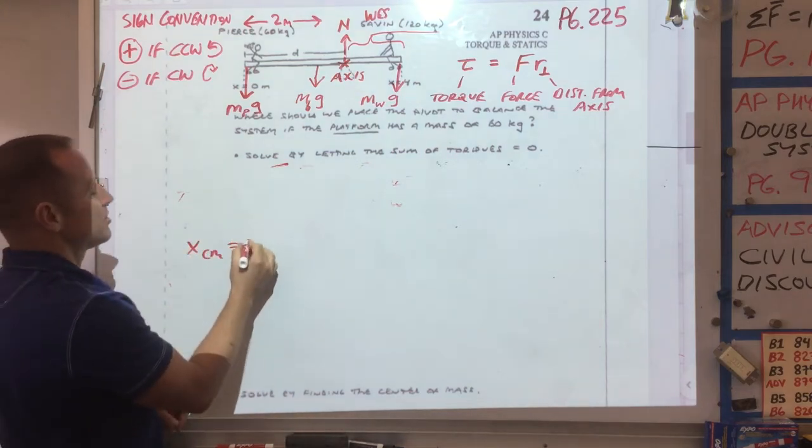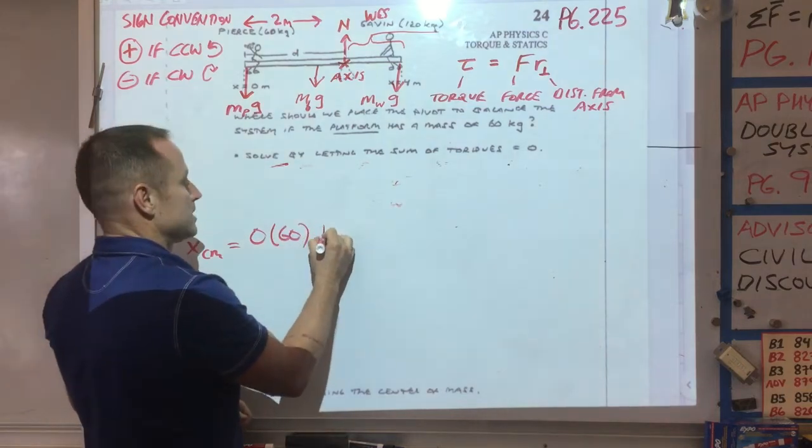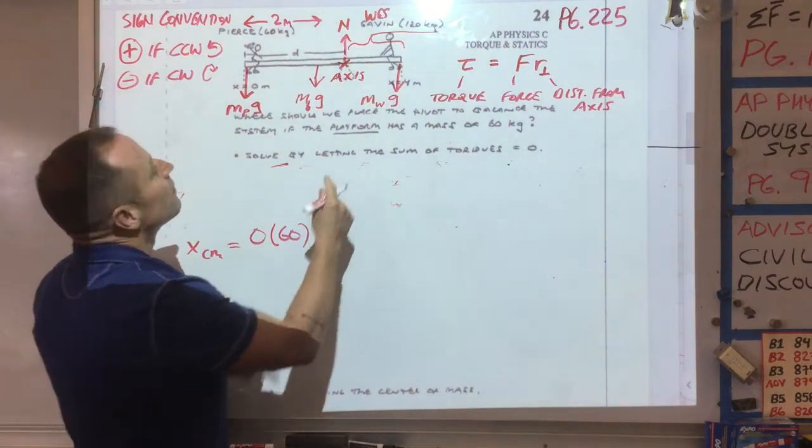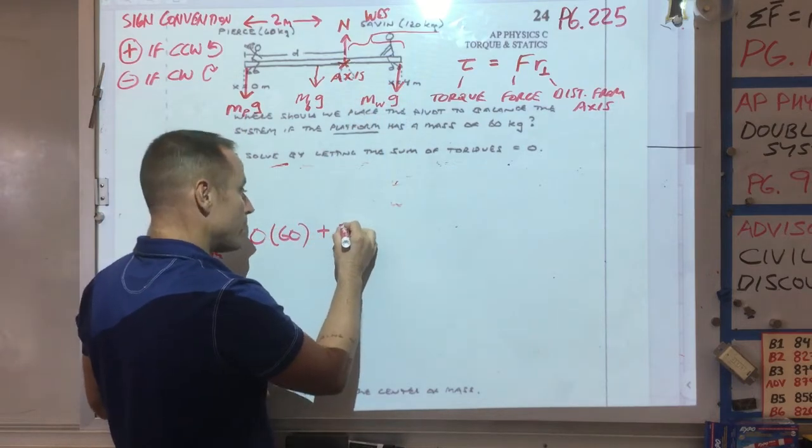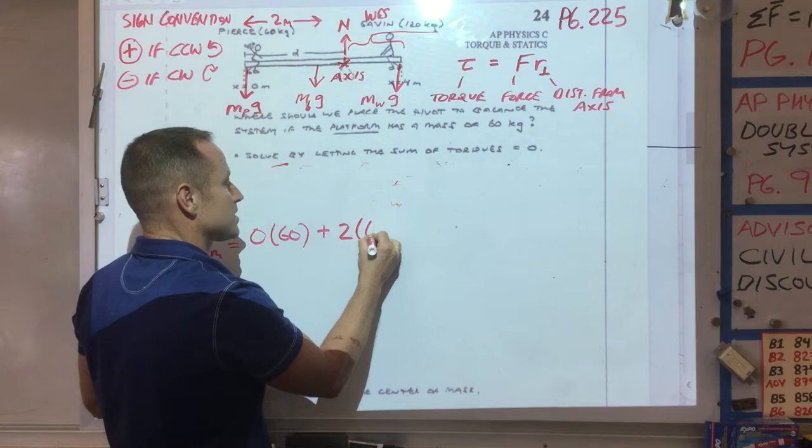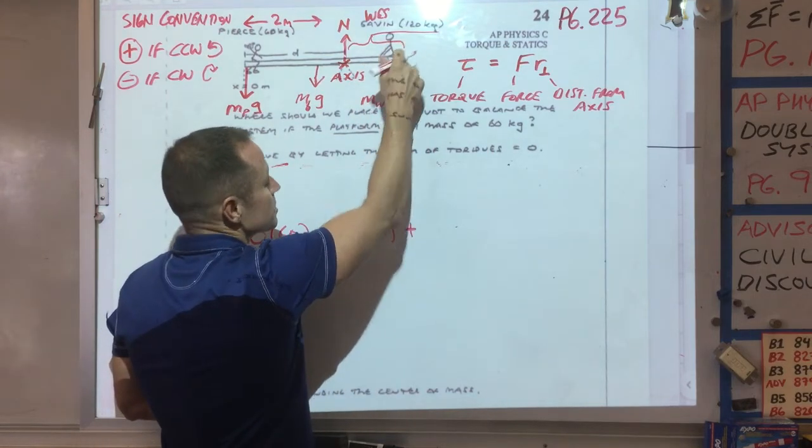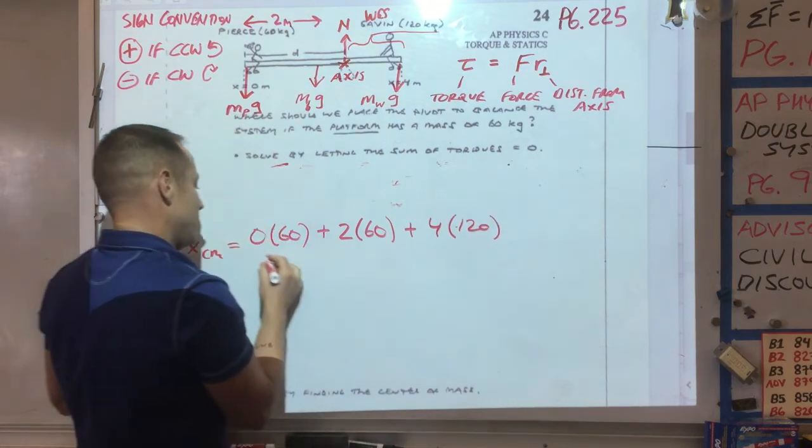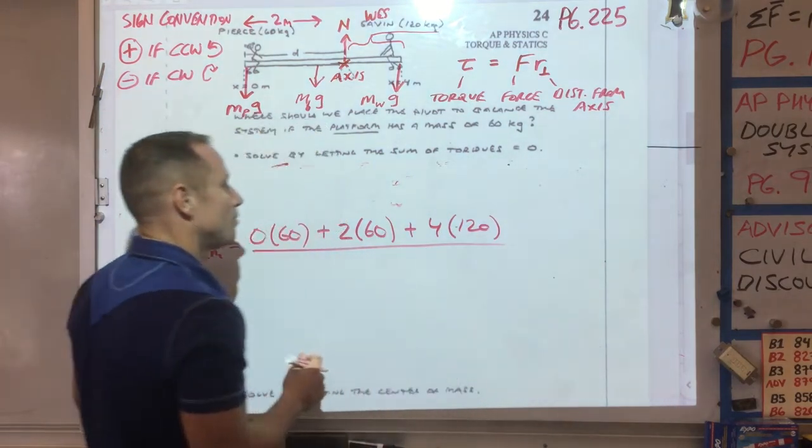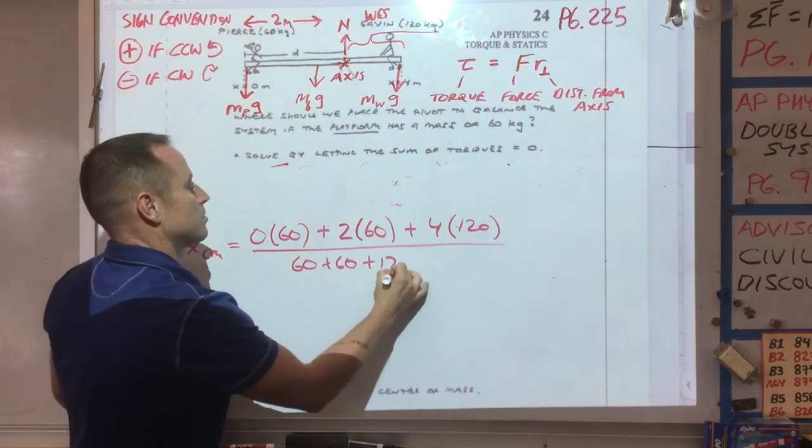Your position of the center of mass, you'd say position 0 is worth 60. Position 2, the board's 4 meters long, so the center of the board would be position 2, that's worth 60. And then position 4, which is where Wes is, that's worth 120.